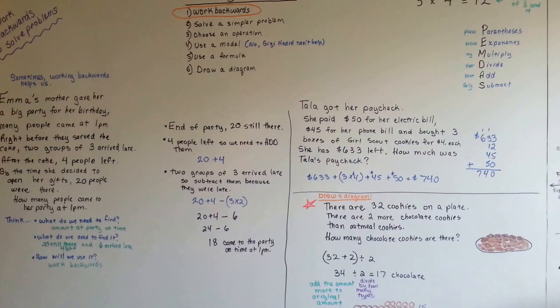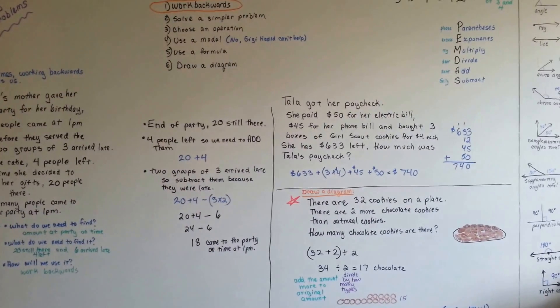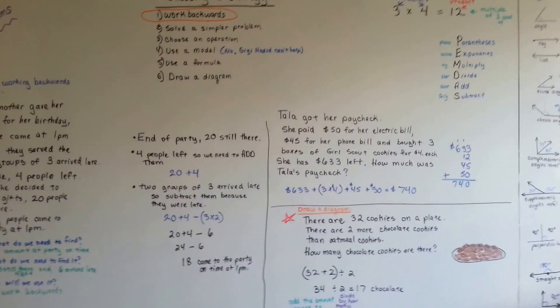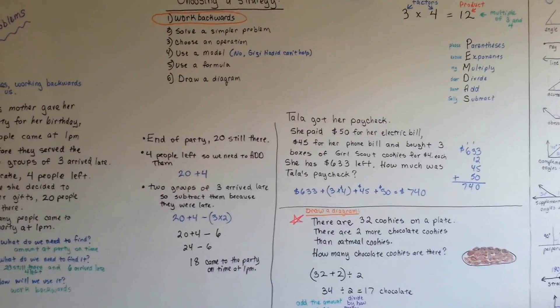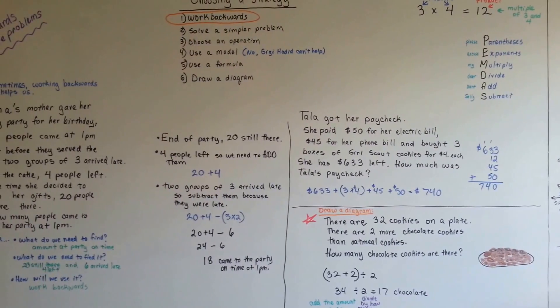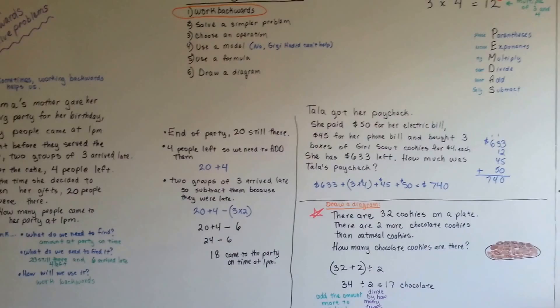So that's working backwards to solve problems. And don't feel that you have to be stuck with that. If you start to work backwards and you have trouble, draw a picture too. Or use a model or a formula while you're working backwards. Draw a diagram while you're working backwards. You can combine them. Okay? I hope that helps. See you next video.